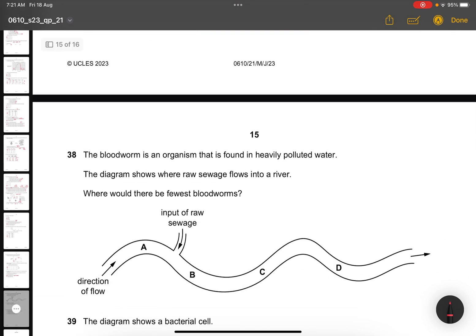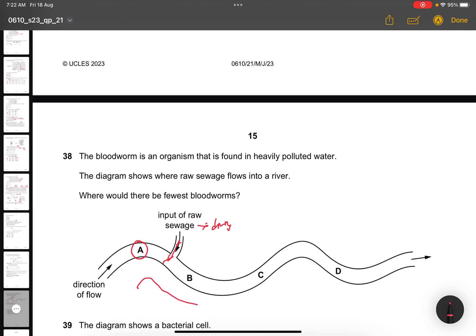Question 38. This is a past paper question. The bloodworm is an organism that is found in heavily polluted water. The diagram shows where raw sewage flows into a river. Where would there be the fewest bloodworms? The answer for this would be A. You can see, this is a raw sewage. It will usually be dirty and there could possibly be bloodworms. So when bloodworm in, it's only B will detect. A won't detect because the river flow is going this direction. So A is before the raw sewage. Therefore, it has the fewest bloodworms.